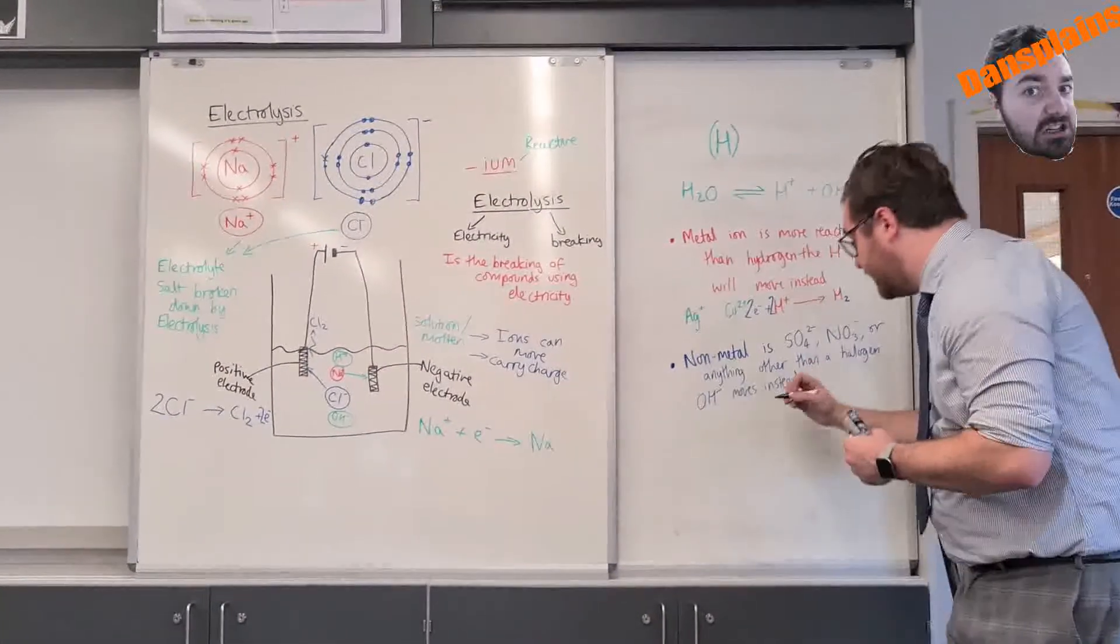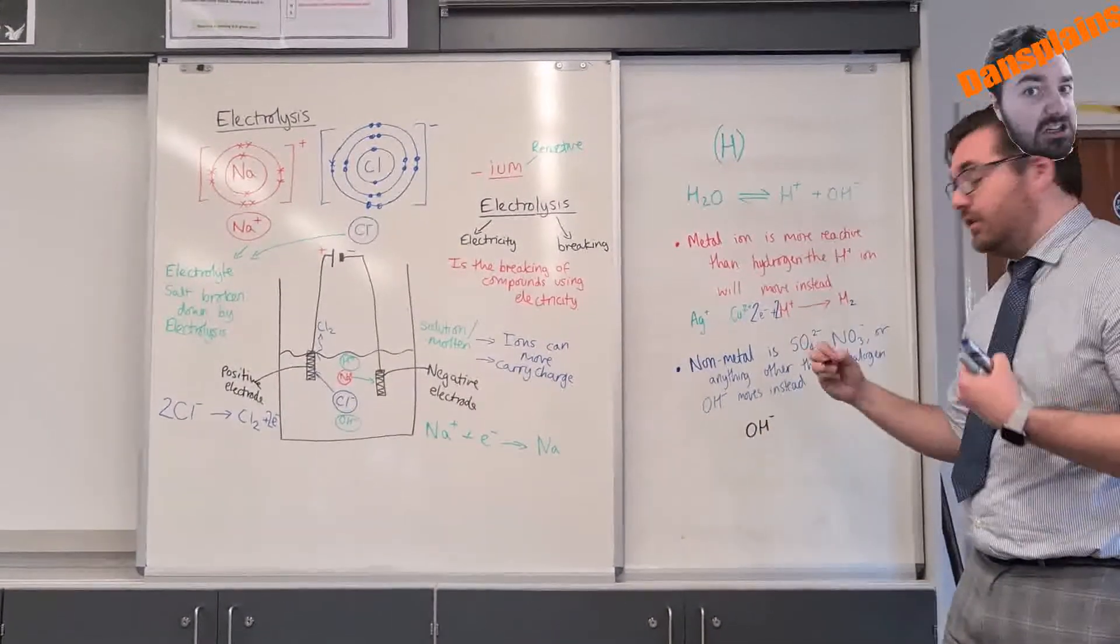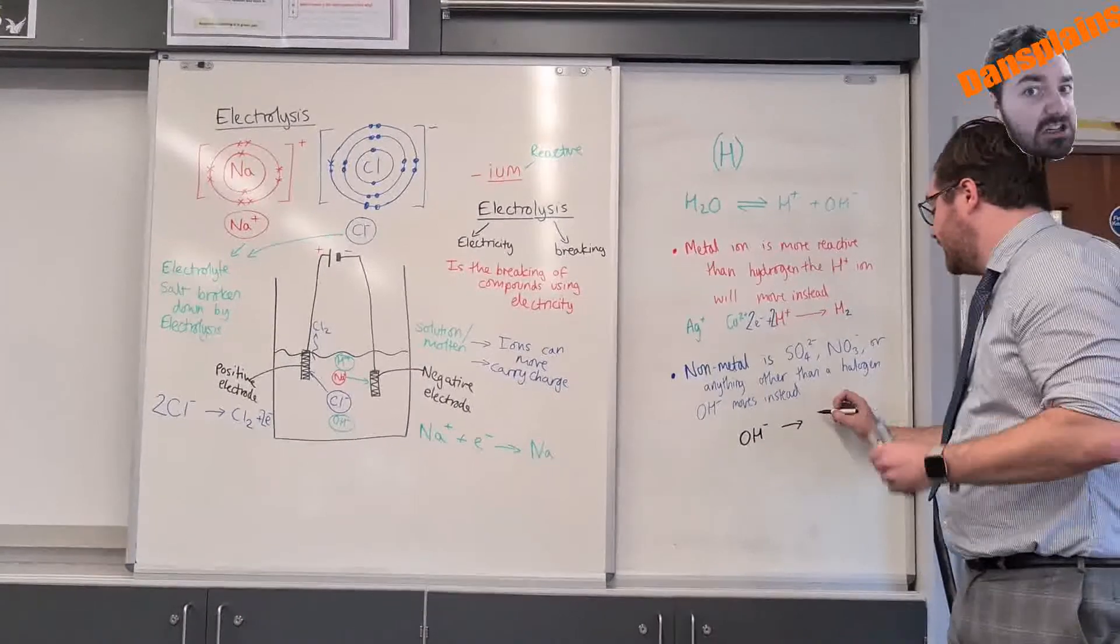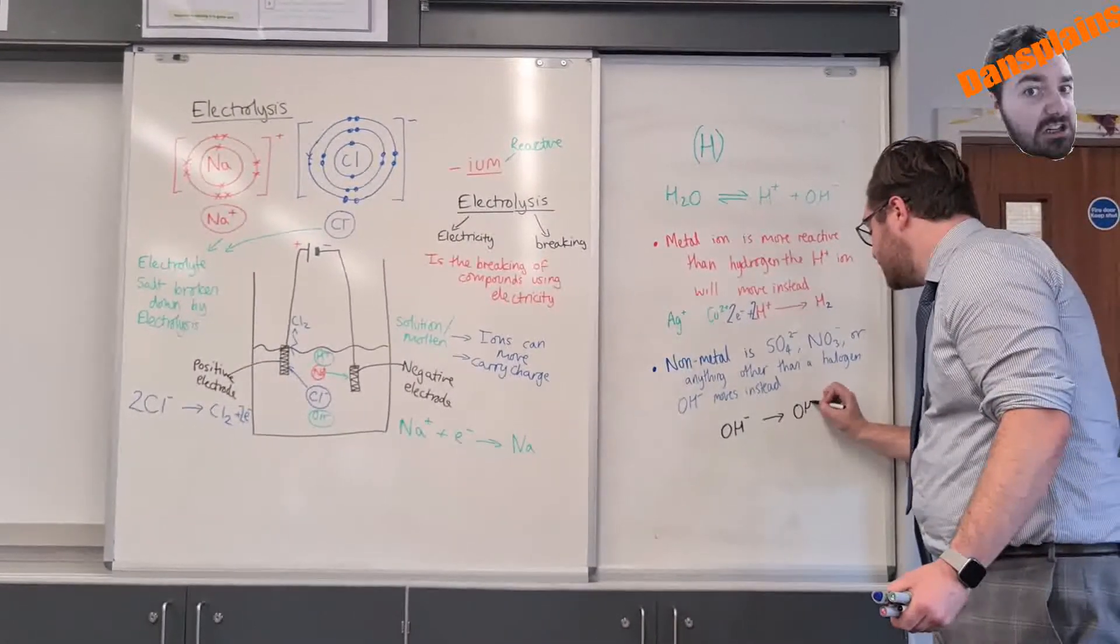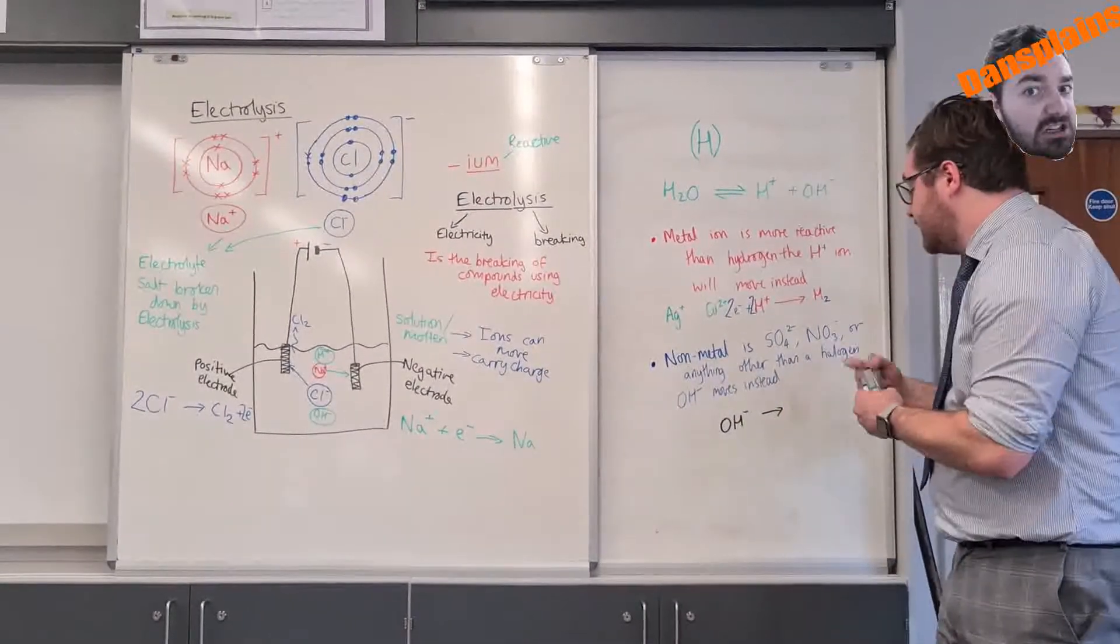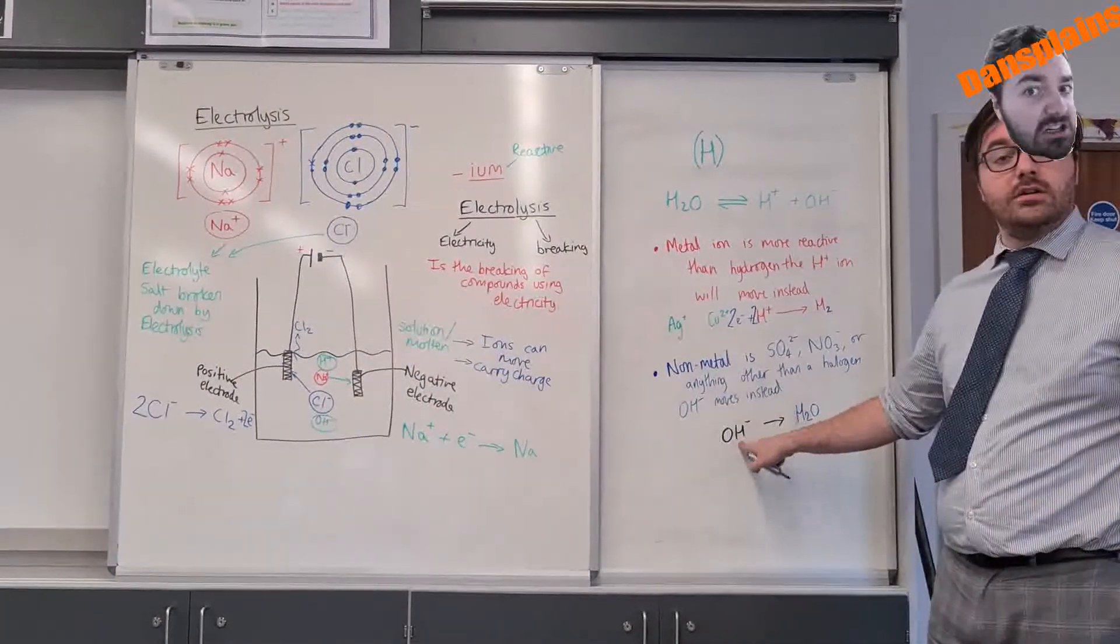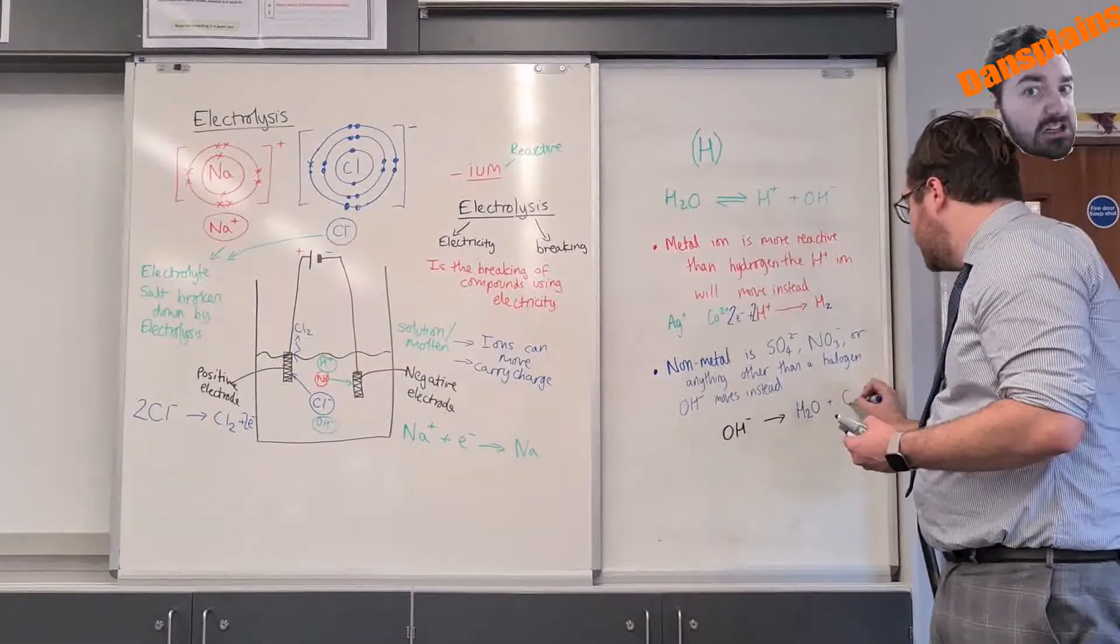When it's OH moving instead, OH- is going to move and it's going to lose an electron. But when this loses an electron it makes OH on its own like that which you can't have. So what we end up doing is we make water H2O, so the hydrogen of one goes to the OH of another and we make oxygen.